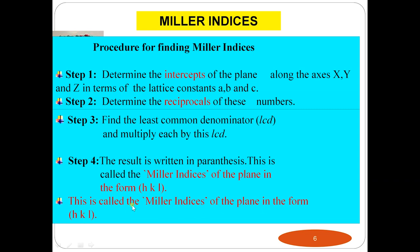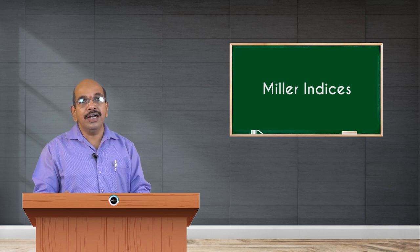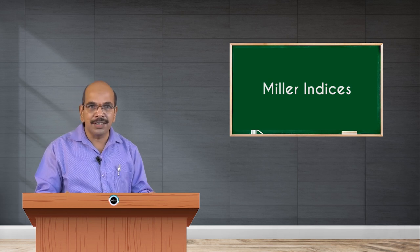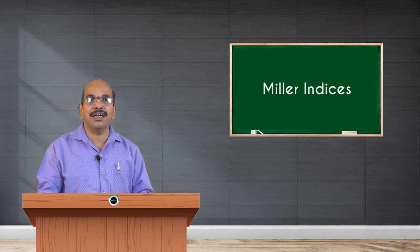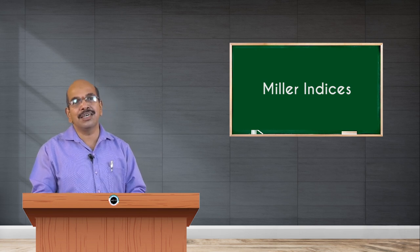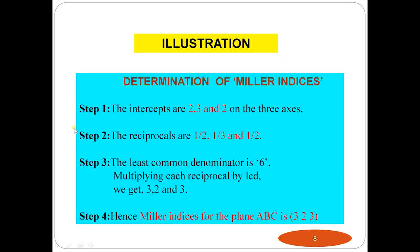To summarize the procedure: get the intercepts along the three axes x, y, and z; find their reciprocals; multiply by the LCD; and express the result as (hkl) in brackets — that is the Miller index. Now let us take an example. Consider a triangular plane that cuts the x-axis at 2 units, the y-axis at 3 units, and the z-axis at 2 units. Therefore, the intercepts of the plane are 2, 3, and 2 along the three axes.